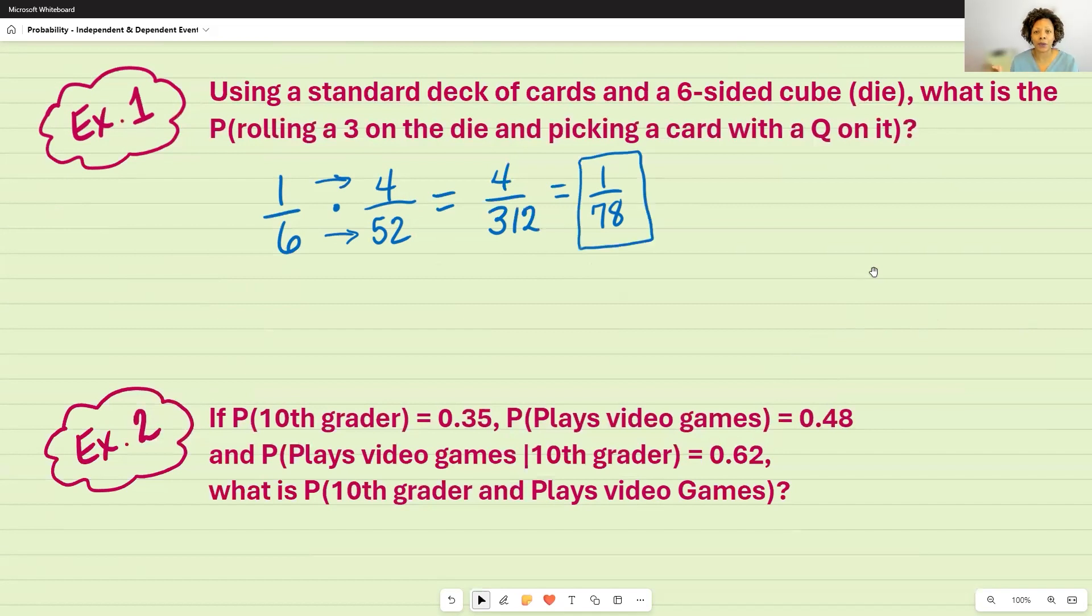Now, in terms of whether or not this is an independent or dependent event, this is an independent event, because this event had nothing to do with the second one. So they're independent of each other.